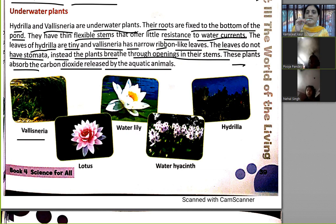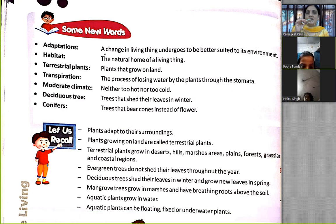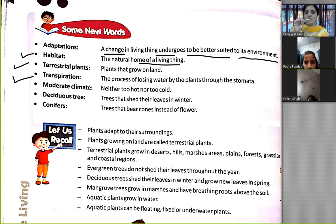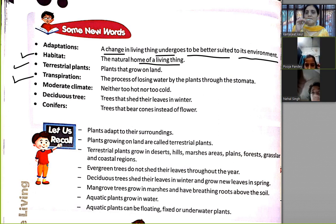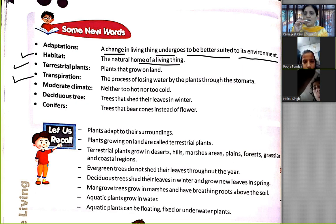Some new words: adaptation — a change a living thing undergoes to better suit its environment. Habitat — the natural home of a living thing. Traditional plants — plants that grow on land. Transpiration — the process of losing water by plants through stomata. Moderate climate — neither too hot nor too cold. Deciduous trees — trees that shed their leaves in winter.